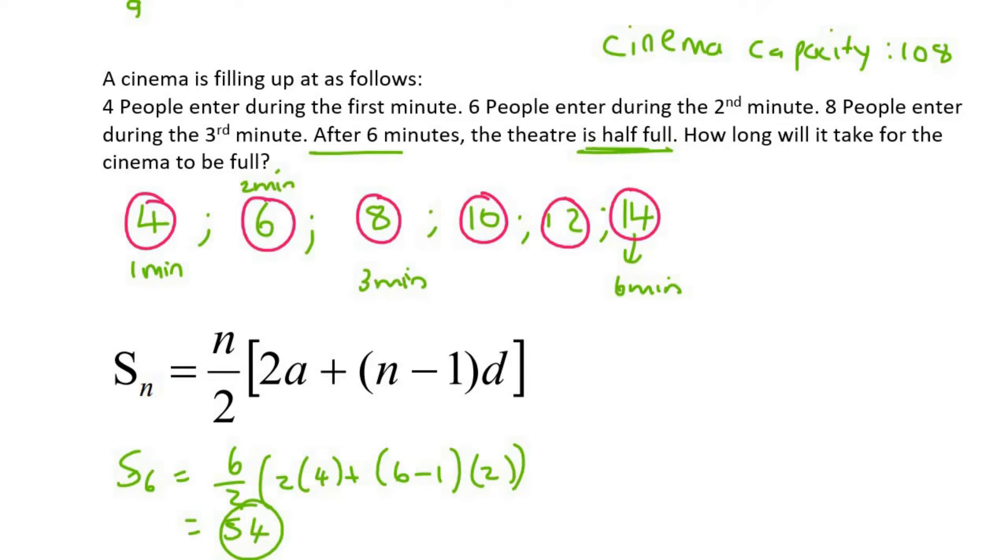So it says, how long will it take for the cinema to be full? Well, we know that we need to get 108 people in there all together. So I'm using this formula again, but now N, I don't know - the number of minutes, I don't know. A is still going to be four, and the common difference is two.